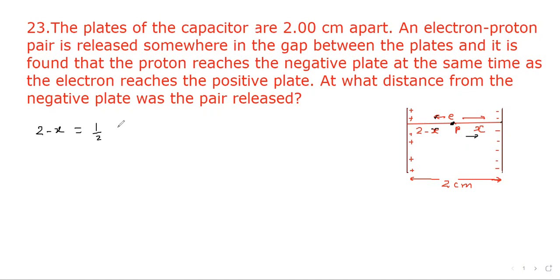And distance travelled by the proton is x equal to half acceleration of the proton times t squared.